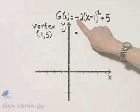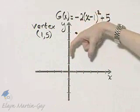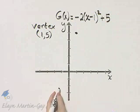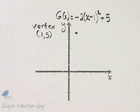This negative, that means the parabola opens downward. And so if the parabola opens downward, we're just going to sketch it in. But let's go ahead and give ourselves one more point.